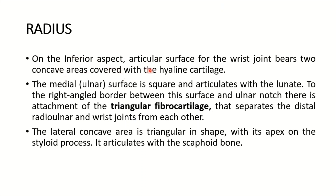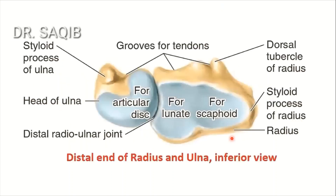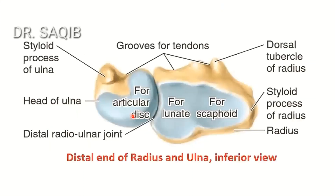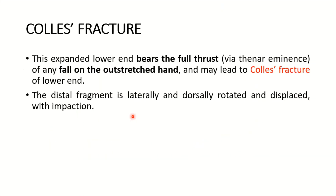On the inferior aspect, the articular surface of the wrist joint bears two concave areas covered with hyaline cartilage. The medial surface is square and articulates with the ulna. At the right-angle border between this surface and the ulnar notch, there is attachment of the triangular fibrocartilage that separates the distal radioulnar and wrist joints from each other. The lateral concave area is triangular in shape with its apex on the styloid process and articulates with the scaphoid bone.